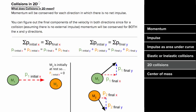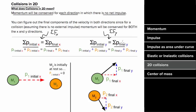How do you deal with collisions in two dimensions? Momentum will be conserved for each direction in which there's no net impulse. If there's no net impulse in both directions, the momentum in both directions is conserved independently. If there's no net force in the x direction, the total x momentum is constant, and if there's no net force in the y direction, the total y momentum is constant.